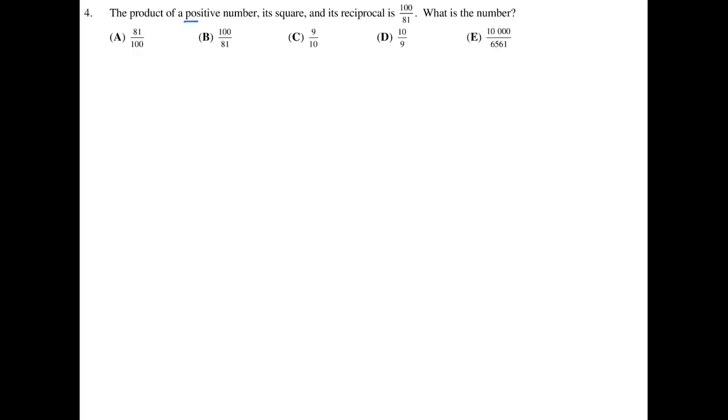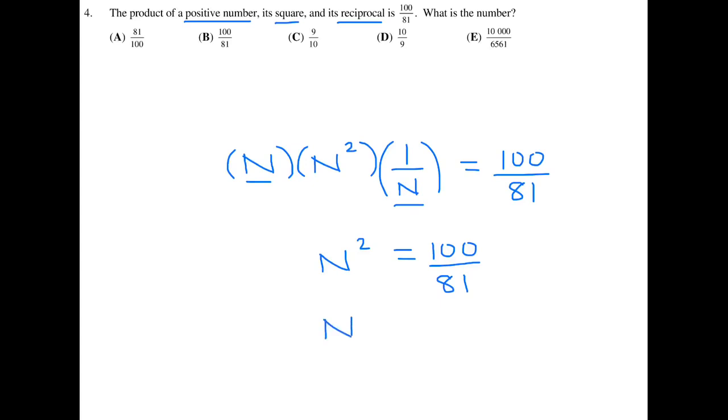The product of a positive number, its square and its reciprocal is 100 over 81. What is the number? Let the number equal N. The product of that number and its square, which is N squared, and its reciprocal, which is 1 over N, is equal to 100 over 81. This and this will cancel, so we're just left with N squared equals 100 over 81. Take the square root of both sides, and this is equal to 10 over 9. That would be choice D.